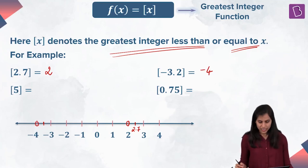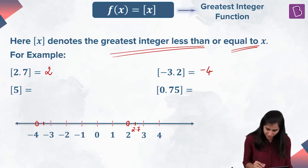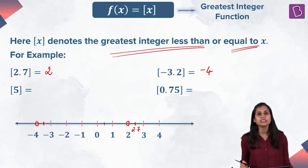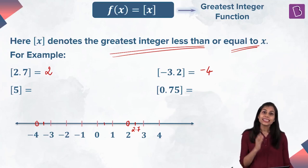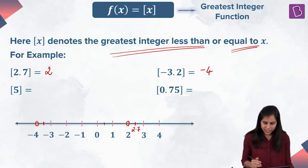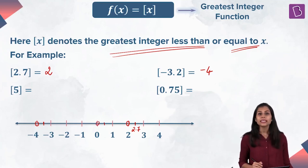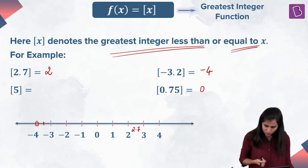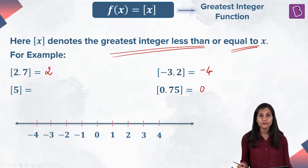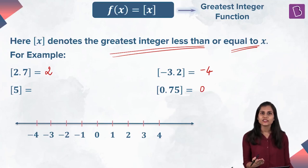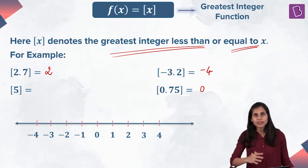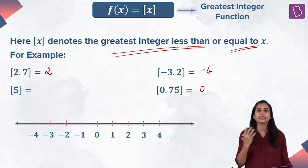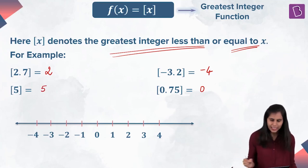What about 0.75? It is sitting between two consecutive integers, 0 and 1. The integer lying on the immediate left of 0.75 is 0. That means bracket 0.75, the greatest integer strictly less than 0.75, is 0. And what about bracket 5? 5 itself is an integer, so the greatest integer less than or equal to 5 is 5 itself.